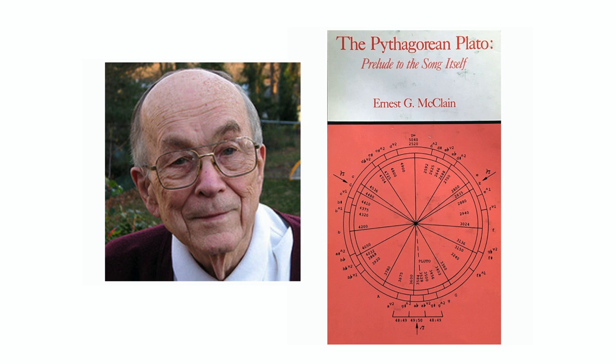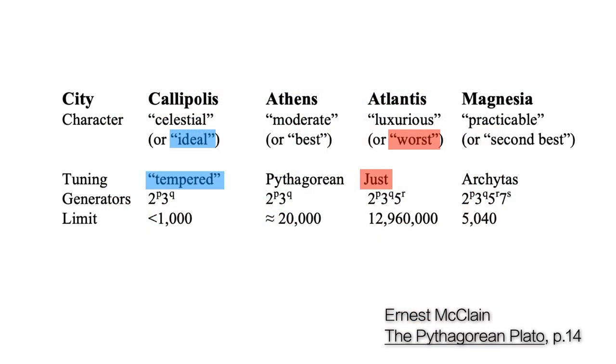And this is a theme that we find in his attempt to musically tune Atlantis. In the Pythagorean Plato, Ernest MacLean exposed hidden musical tuning systems encoded in much of Plato's work. MacLean believed that in portraying the four societies of Callipolis, Athens, Magnesia, and Atlantis, Plato based each one on a method of tuning by which he could judge and compare their social and political success.